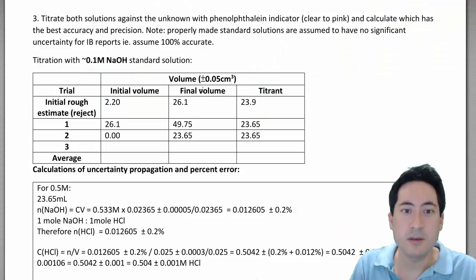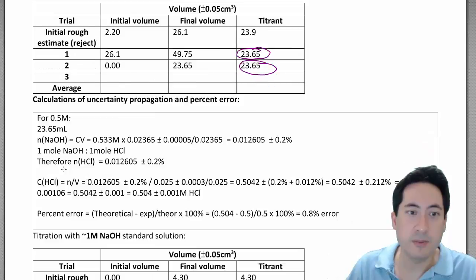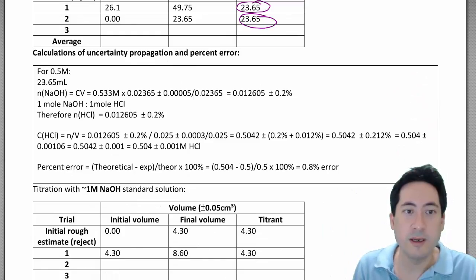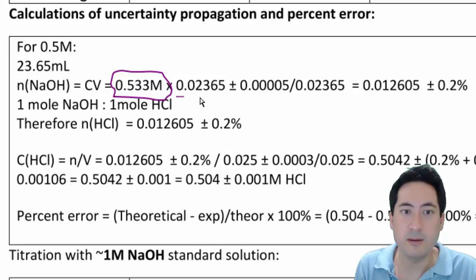So these are the results that we got from the titration: 23.65, 23.65. For the 0.5 molar, I started off with this solution that was a standard solution that we made up in the first video, and then the third video we did the actual titration and that's how we got the 23.65 mils.